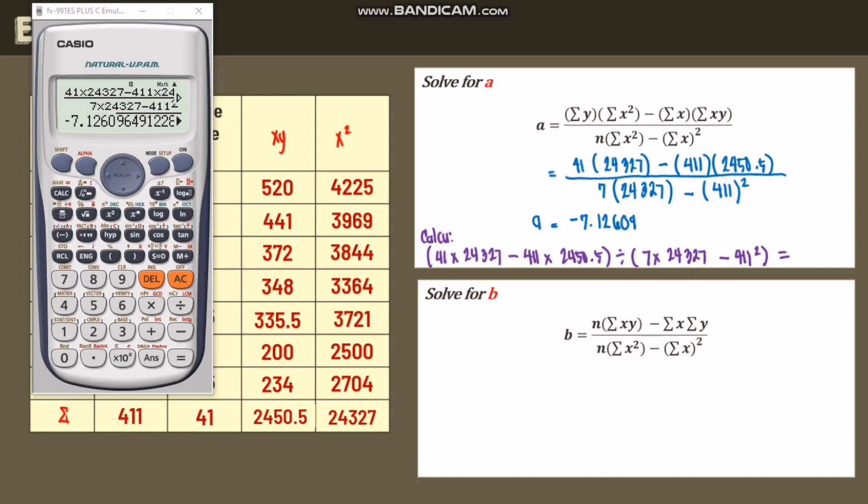And let's write it all. Let's get 4 decimal places. So we have negative 7.1261.